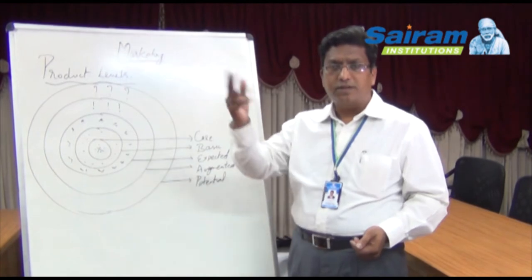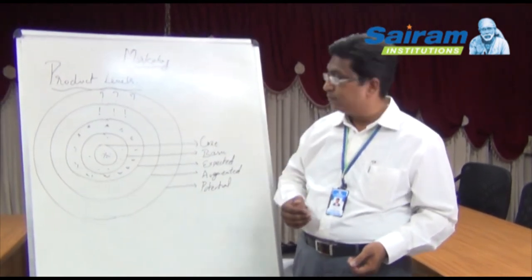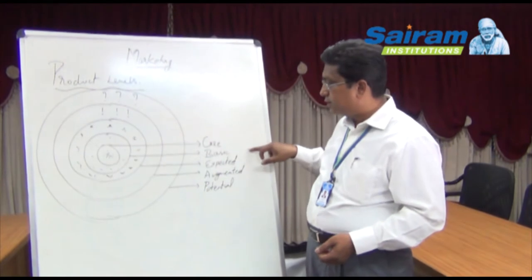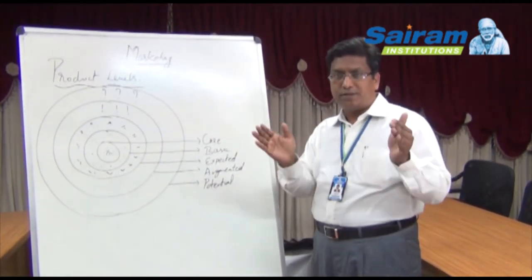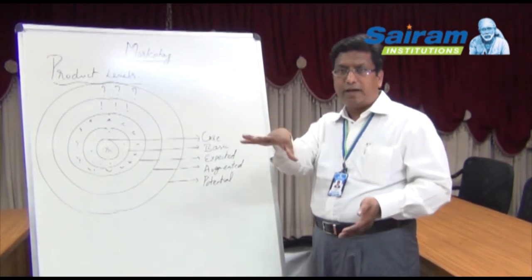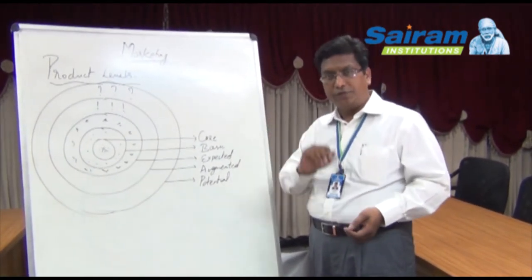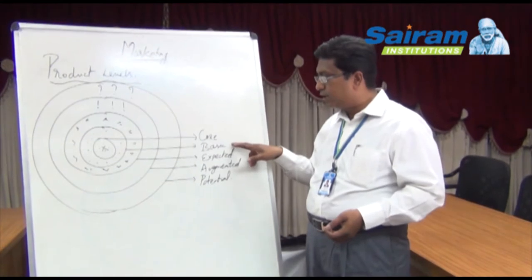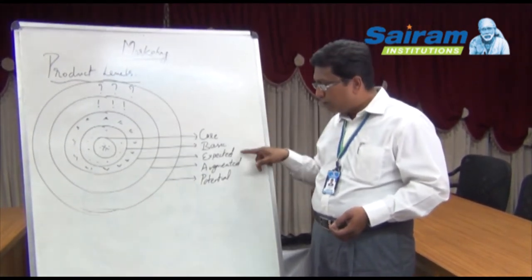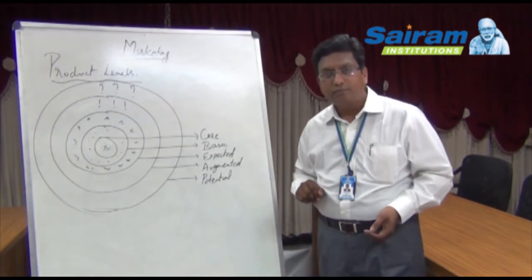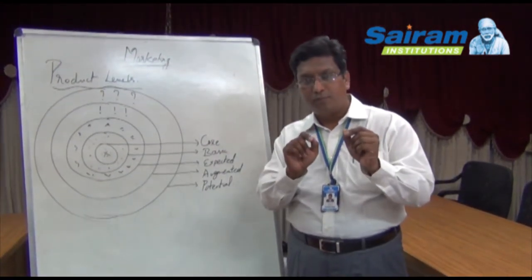The tangibles you see — the brand, the logo, whatever is visible, the table, the infrastructure — everything matters a lot in promoting a product. When we talk about the basic product, you expect a pizza and you want all the basic requirements to be met. When that is delivered to you, you can say that the basic requirement of the product is satisfied.